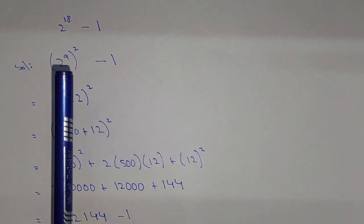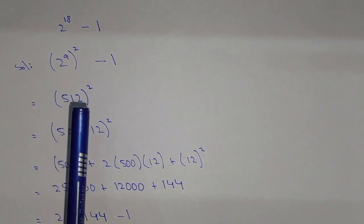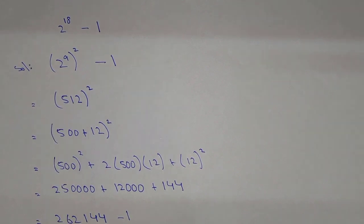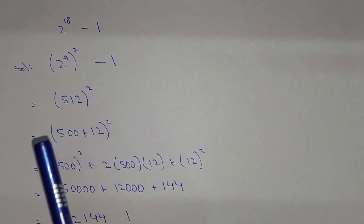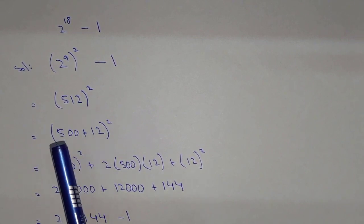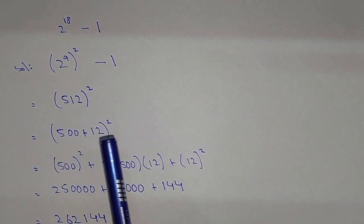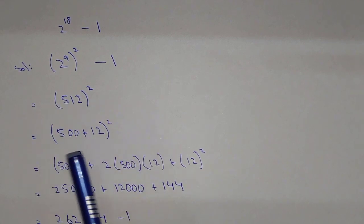So 2^9 is 512, whole squared. We will try to solve it in the easiest way. 512 squared can be written as (500 + 12)^2. Now we can apply the formula.